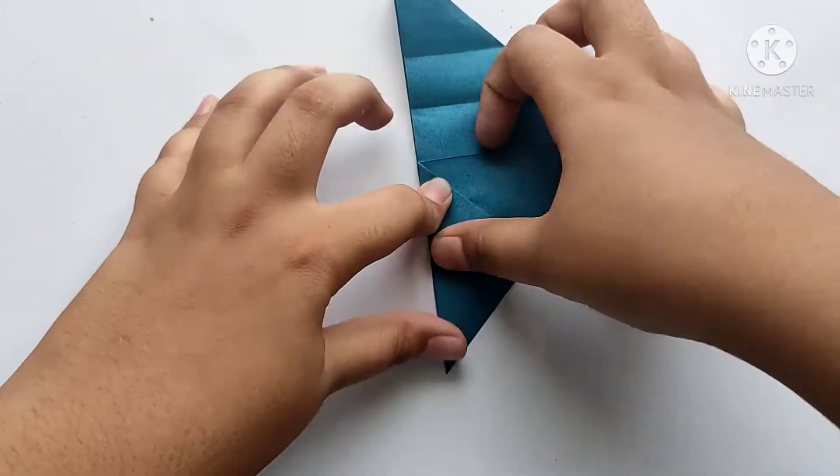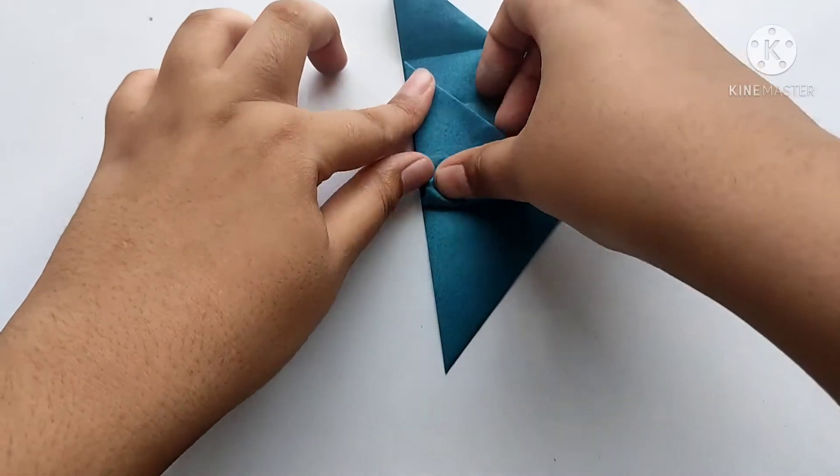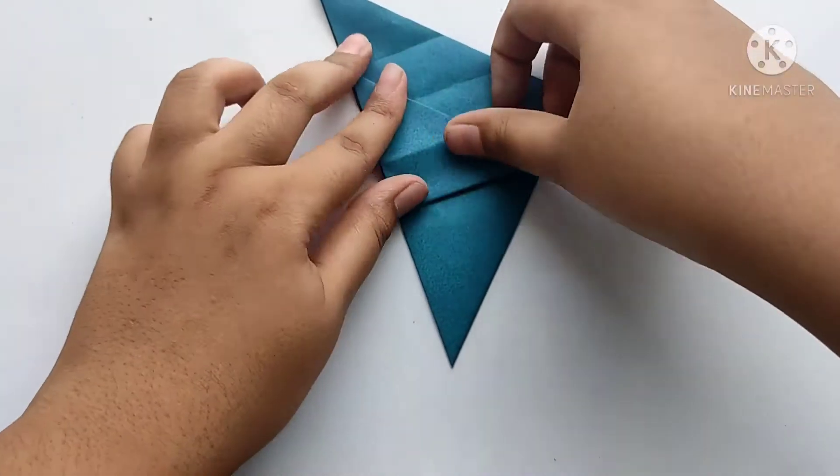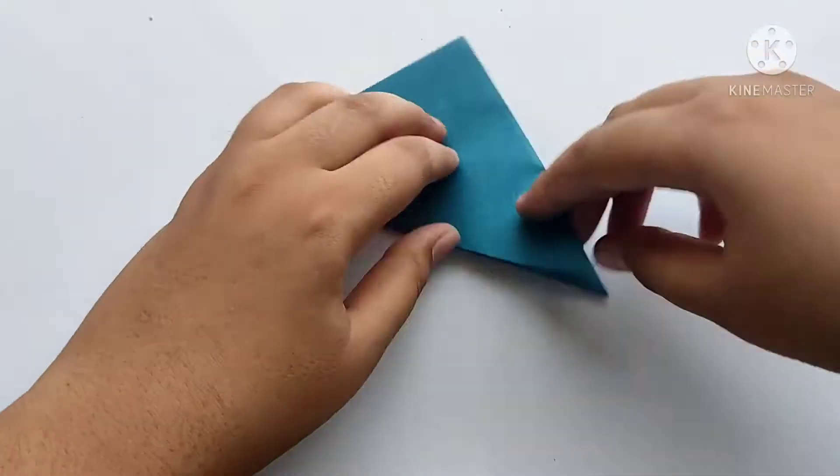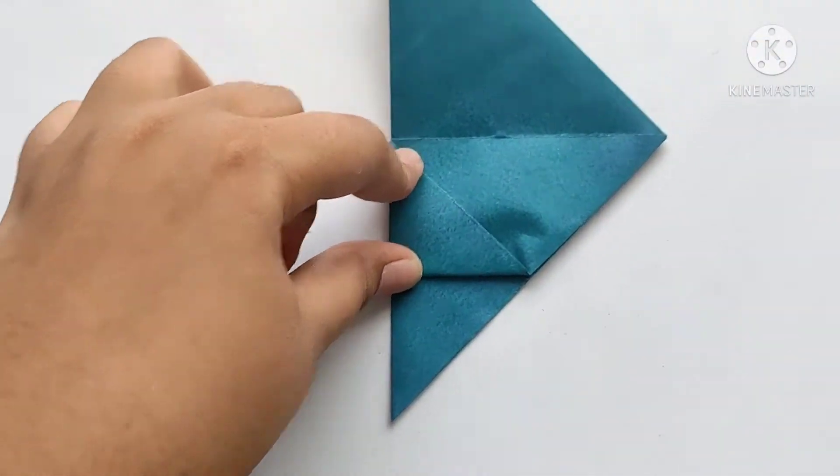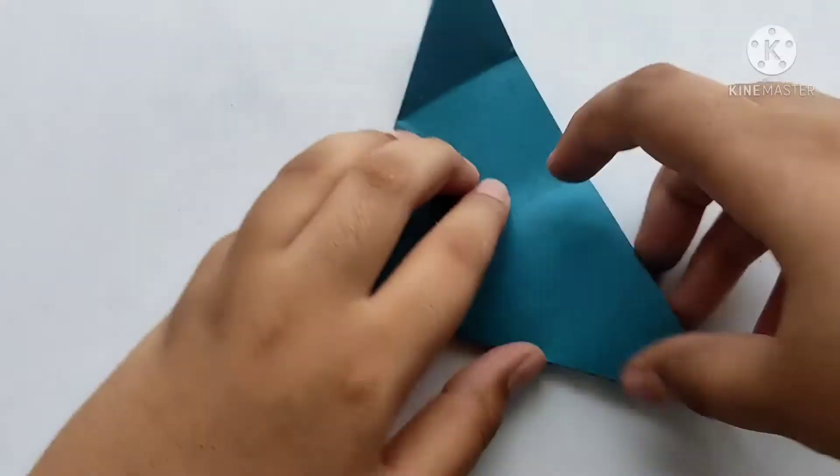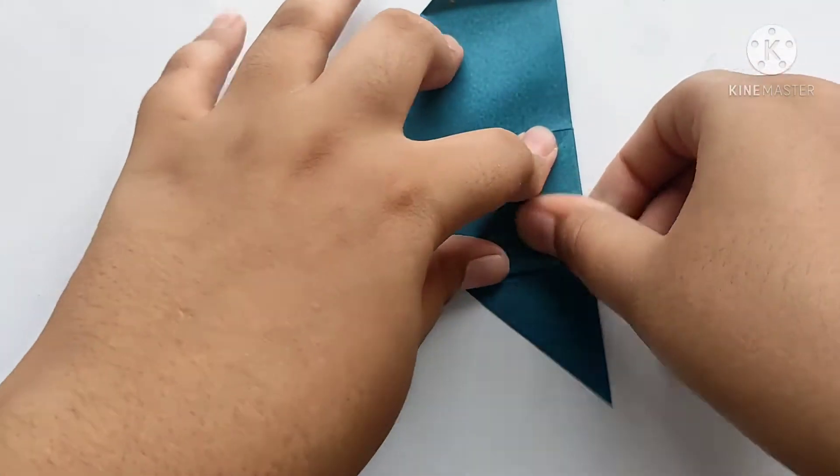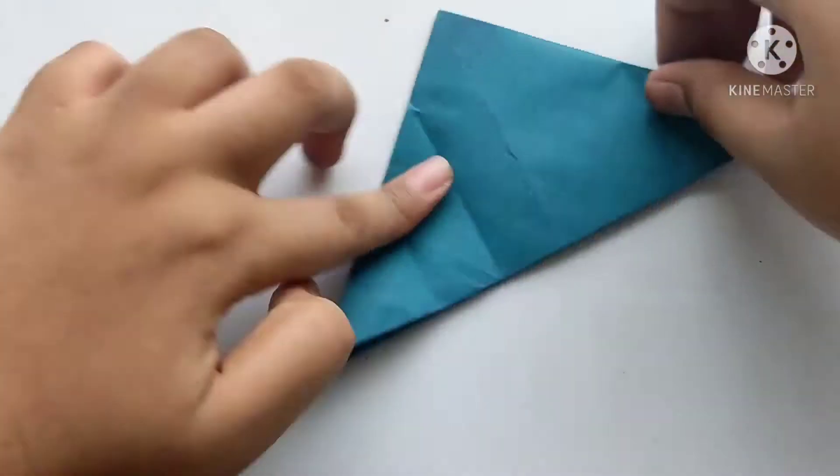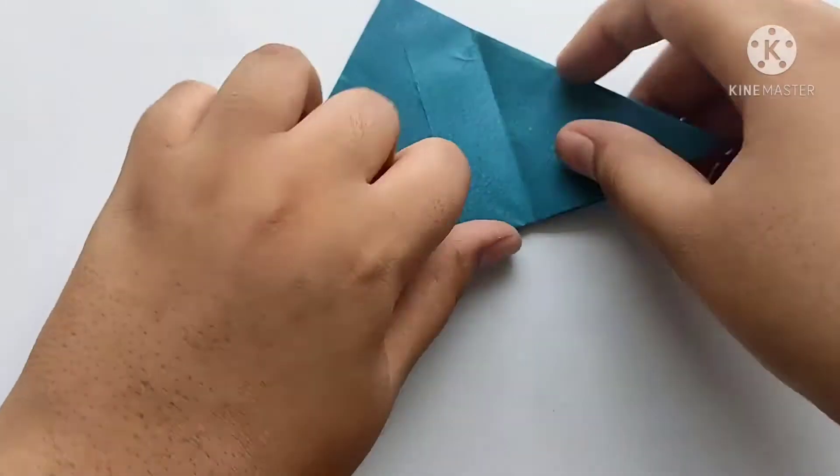Now we need to repeat all the sides like this, and then another half. After folding all the sides like this, now we need to fold downwards at the last line we have folded like this.